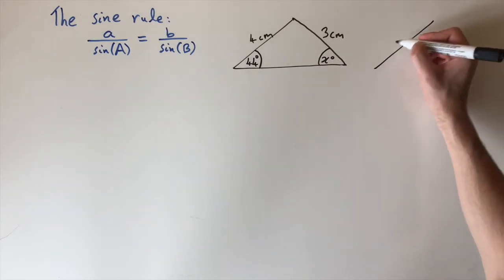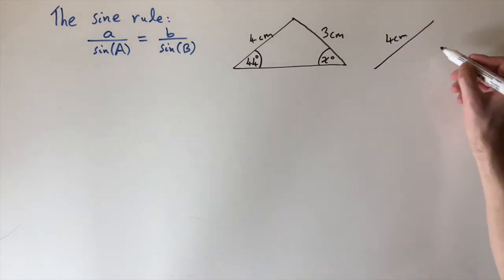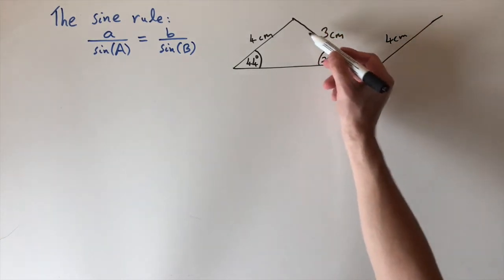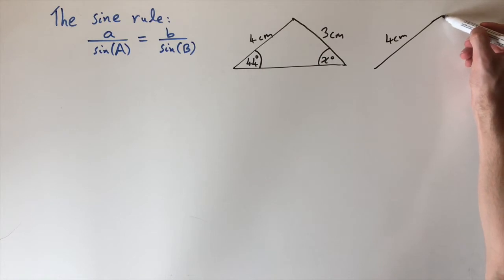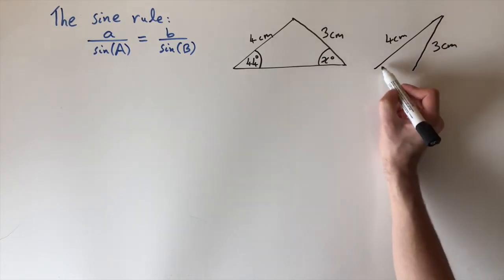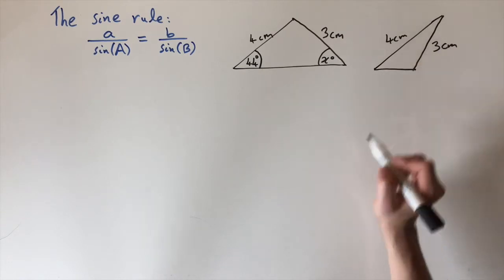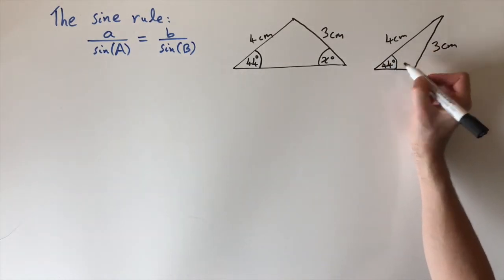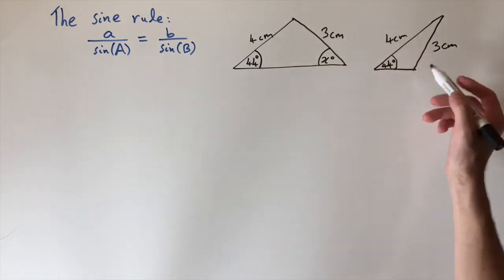like this where this side is 4 centimeters again. But now this length of 3 centimeters, instead of drawing it like this, we draw it to the left of the vertical. So now this is 3 centimeters and this angle is still 44 degrees. Everything in this problem has been preserved except now